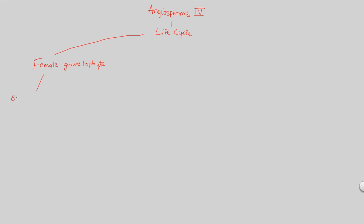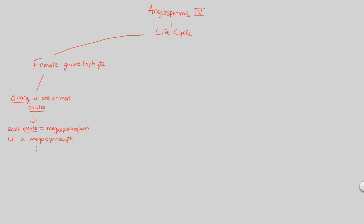First, the plant is going to have an ovary structure, and that ovary will contain one or more ovules. So we have the larger ovary structure as part of the overall plant reproductive structure, and within that we have one or more ovules. Taking it a step further, within each ovule we have a megasporangium — and when we think megasporangium, we are at the female side of the story. The megasporangium possesses within it a megasporocyte.